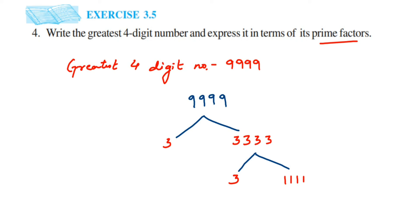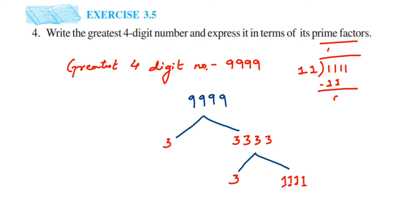Now 1111 goes in the 11 times table. 11 is a prime number — it doesn't go into 3, 5, 7, or anything else; it directly goes into 11. So we divide 1111 by 11. Eleven times one is eleven, remainder zero, and we continue the division to get the next factor.